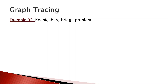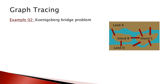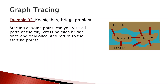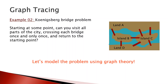There is a river called the Pregel River in Prussia which divides the Königsberg area into four distinct sections — two landmasses A and D, and two islands. These four land sections are connected by seven different bridges. The question is: starting at any point, can you visit all parts of the city crossing each bridge exactly once and return to the starting point? Let's model this using graph theory.